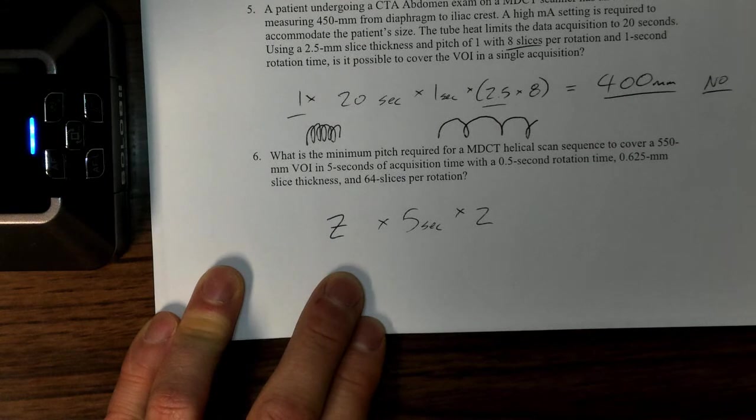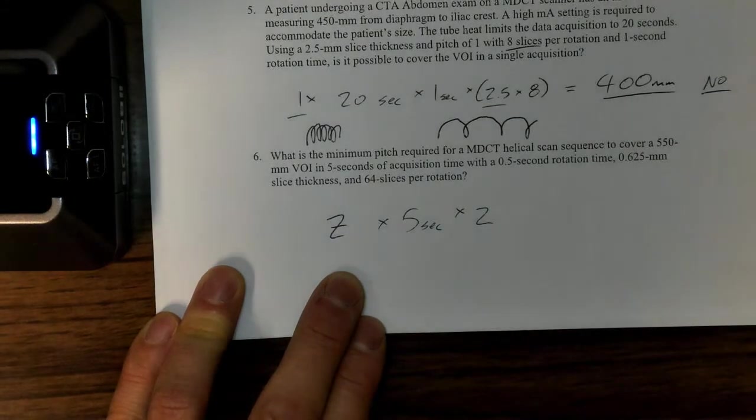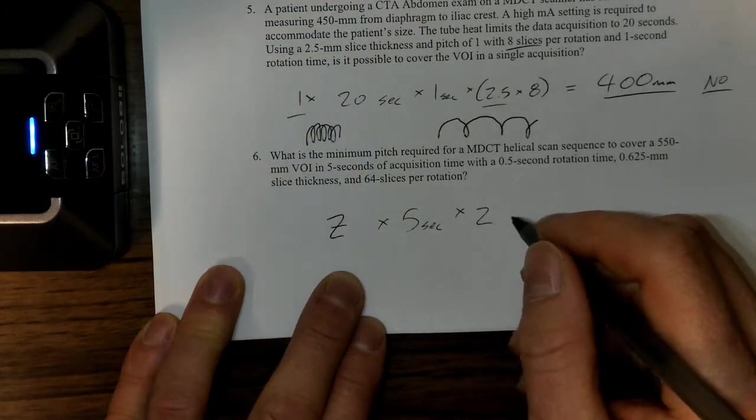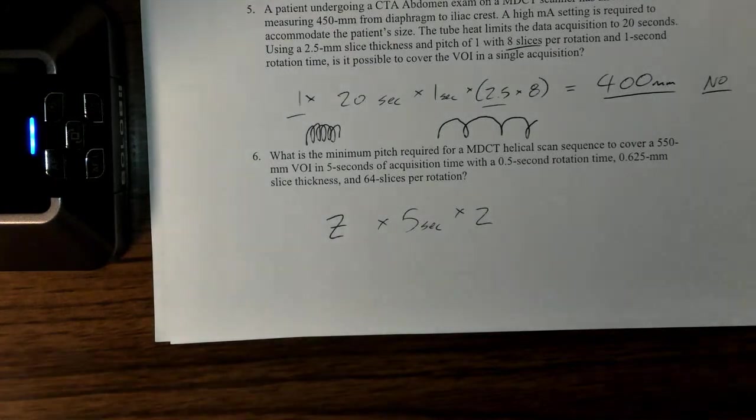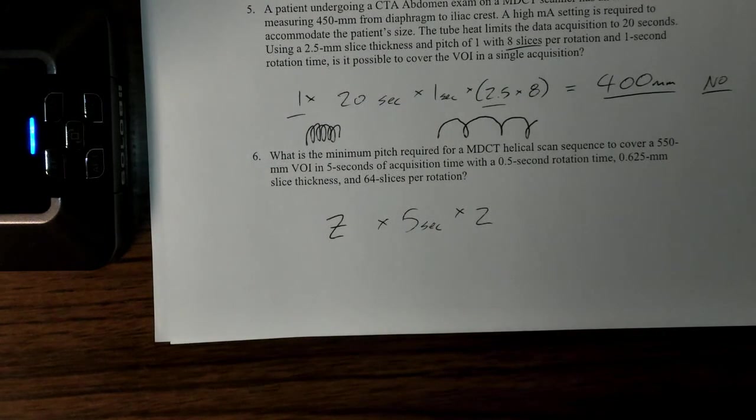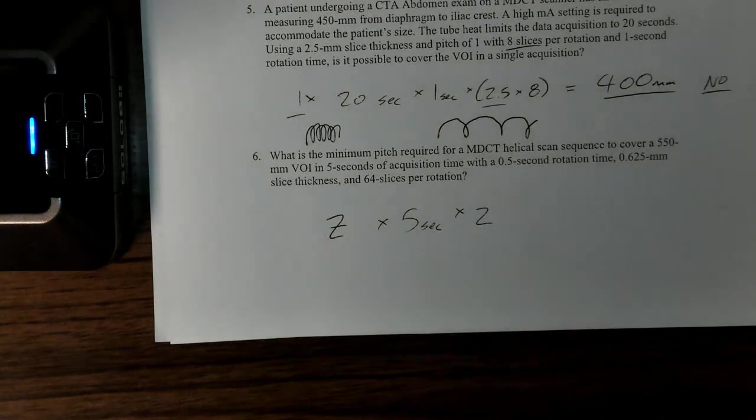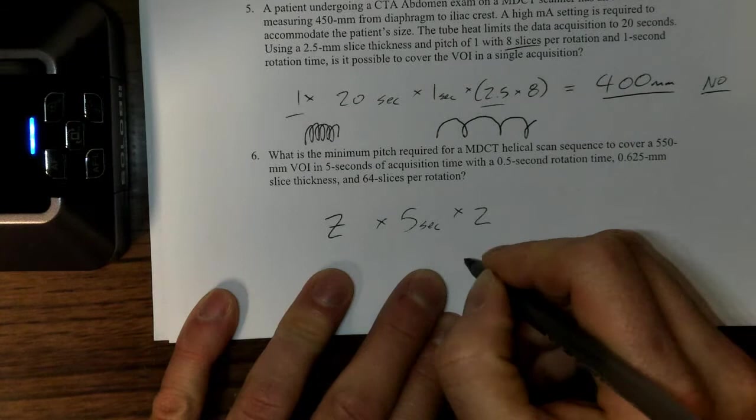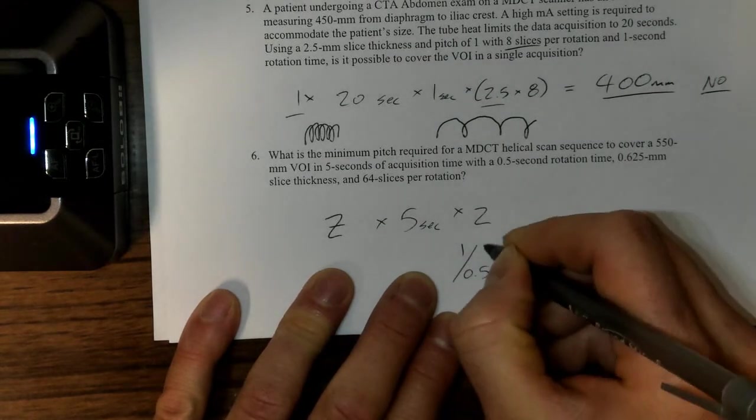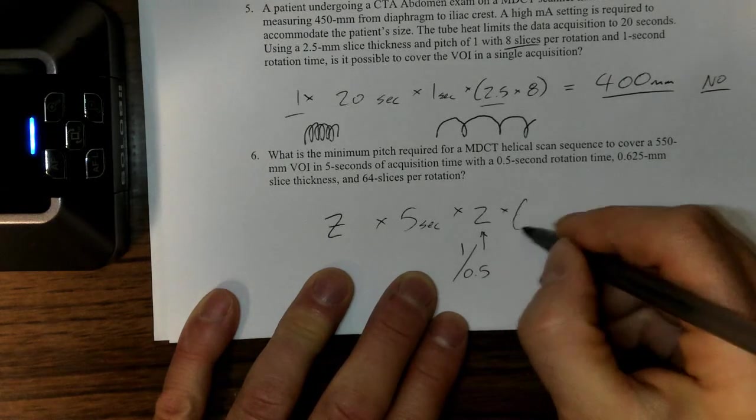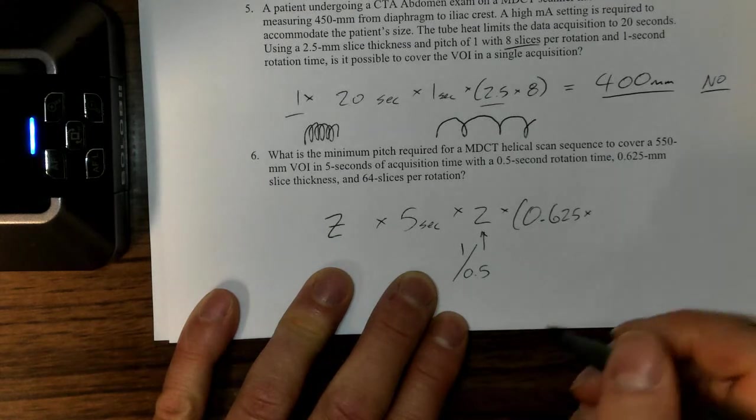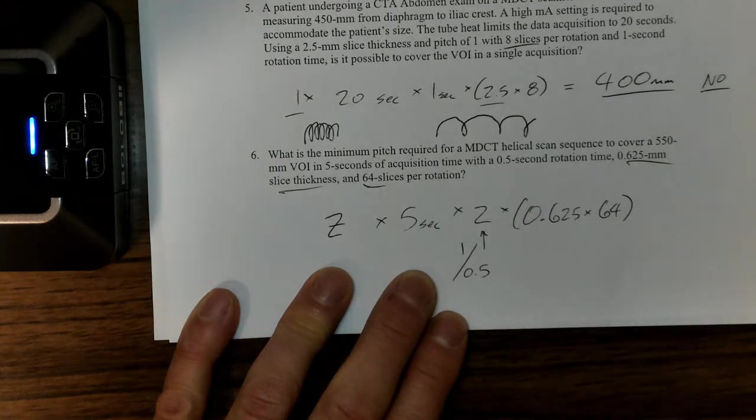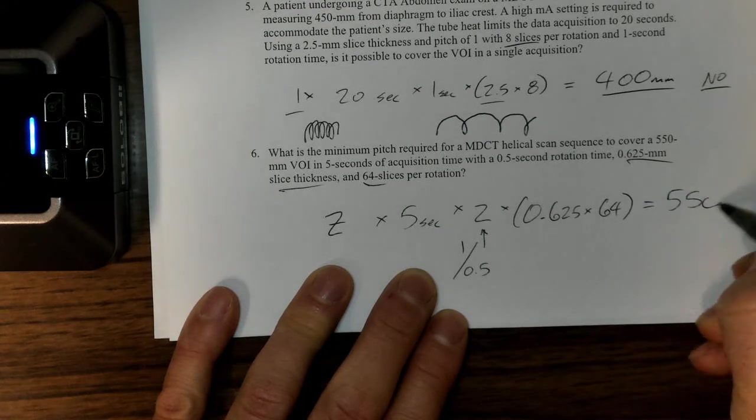In the five-second time, and I've got a two here because I've done 0.5 over 1. Sorry, that's one over 0.5. What I just did was this and that gave me the two. Then it's 0.625—so that's the slice thickness in millimeters—times 64 slices per rotation.